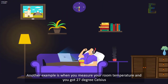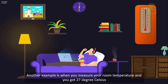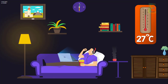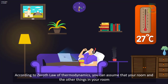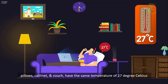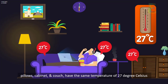Another example is when you measure your room temperature and you got 27 degrees Celsius. According to the zeroth law of thermodynamics, you can assume that your room and the other things in your room — pillows, cabinet, and couch — have the same temperature of 27 degrees Celsius.